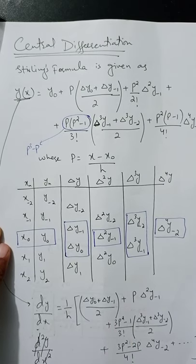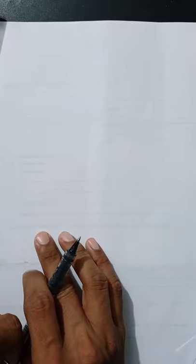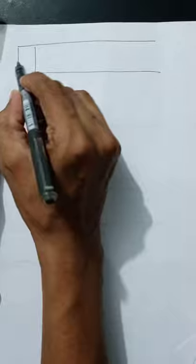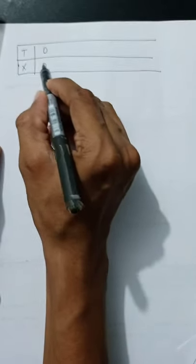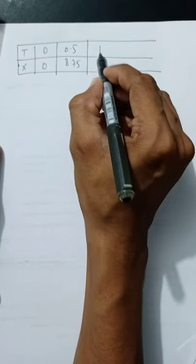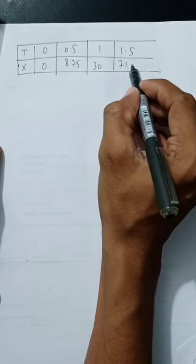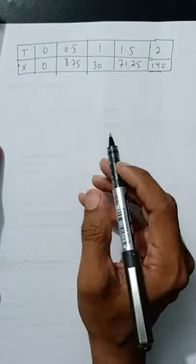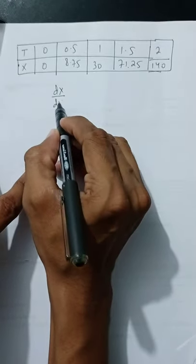Now we are considering an example to solve using Stirling's formula or central differentiation. The question gives a data table of displacement in meters at different times: find the velocity and acceleration at t = 1. The table gives: t = 0, x = 0; t = 0.5, x = 8.75; t = 1, x = 30; t = 1.5, x = 71.25; t = 2, x = 140.